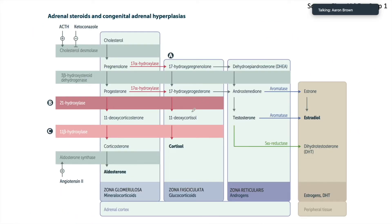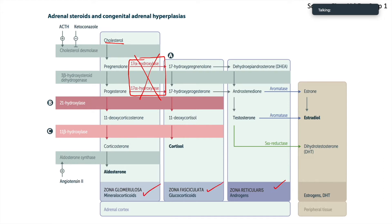Let's look at some examples. This is a really nice diagram from your First Aid book — same thing we just looked at. We have cholesterol going to pregnenolone, going to progesterone, 11-deoxycorticosterone, corticosterone, and aldosterone. In between the layers we have this 17-alpha hydroxylase that allows the transition over. Now let's say we lose this 17-alpha hydroxylase — it gets knocked out. Where is our cholesterol going to go? Glomerulosa. So we would expect all of that cholesterol to turn to aldosterone.